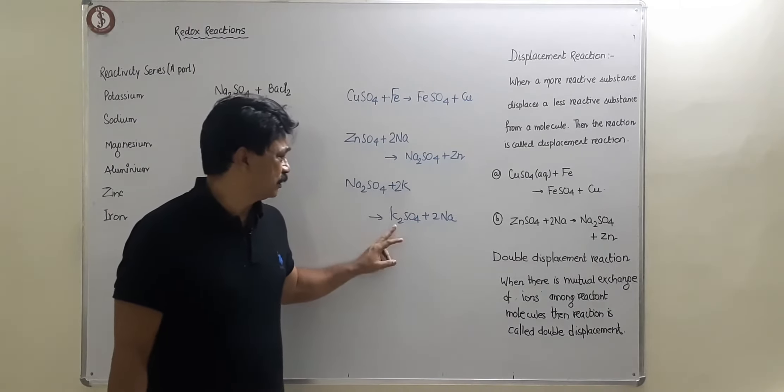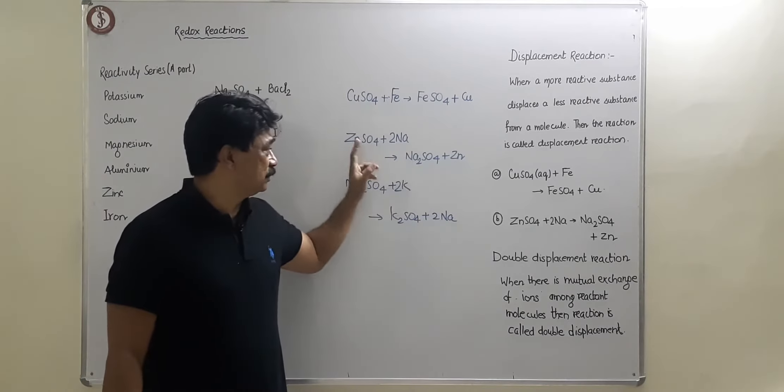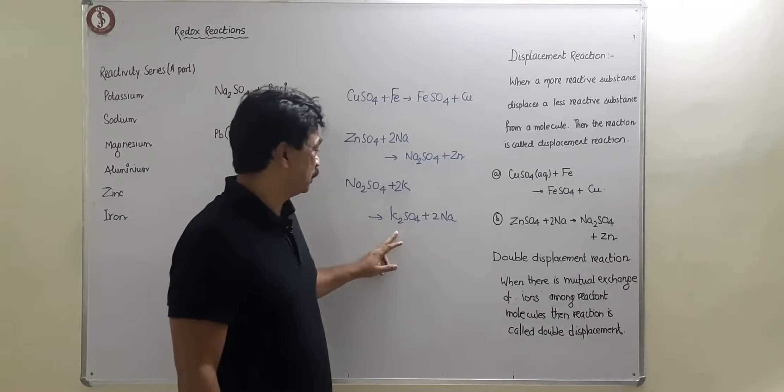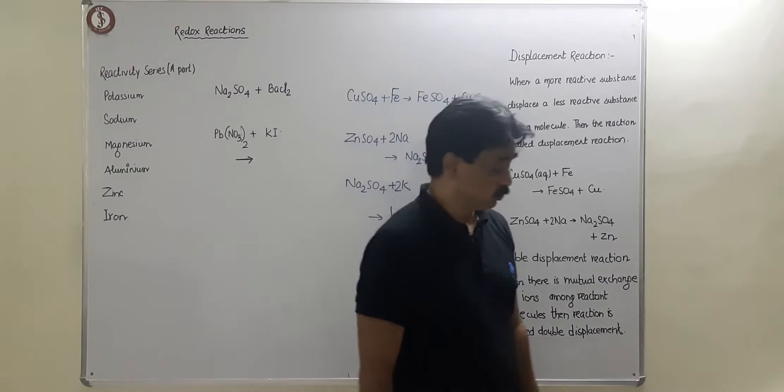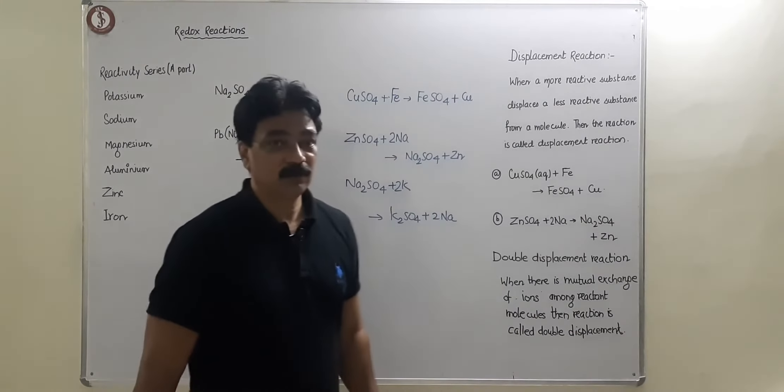K has replaced Na, so K is more reactive than Na. And Na has replaced zinc, so Na is more reactive than zinc. So that means K is the most reactive followed by Na and then zinc. That is the way we have to go about displacement reaction and expect the questions that way. Did you understand?